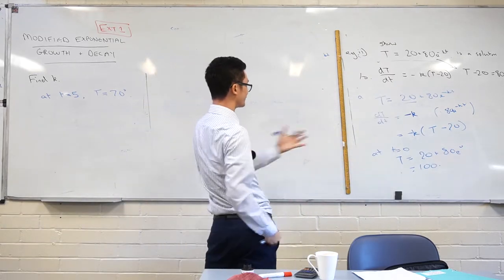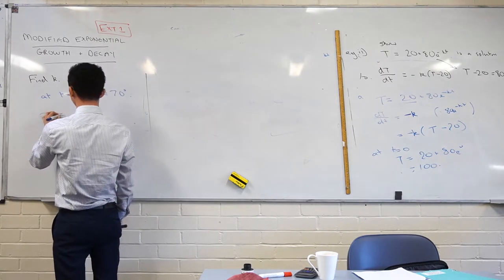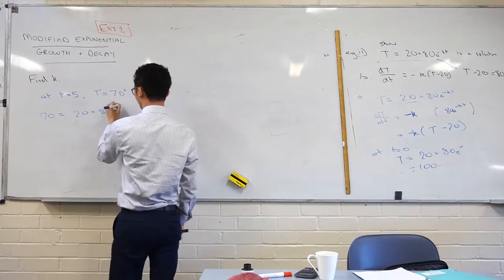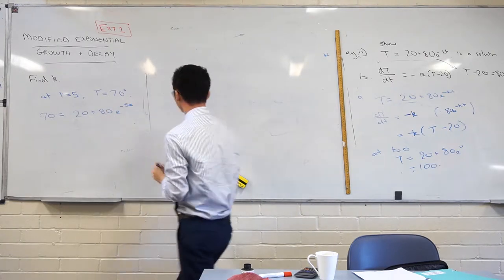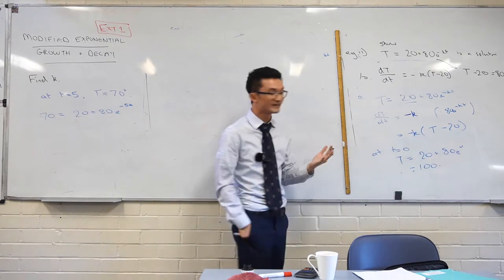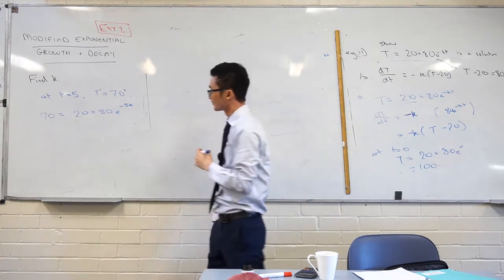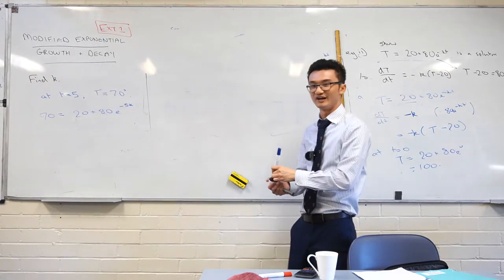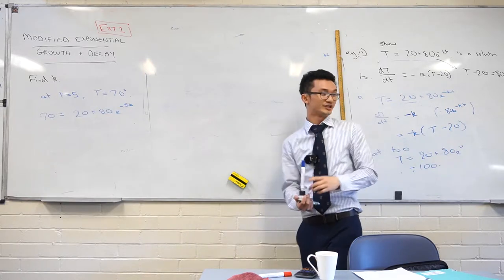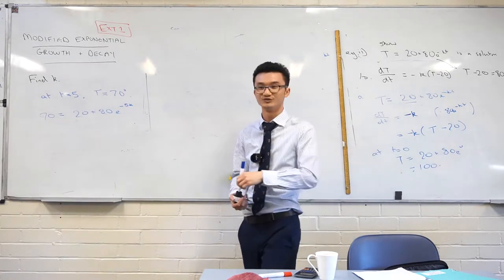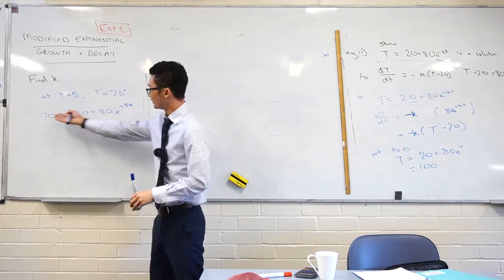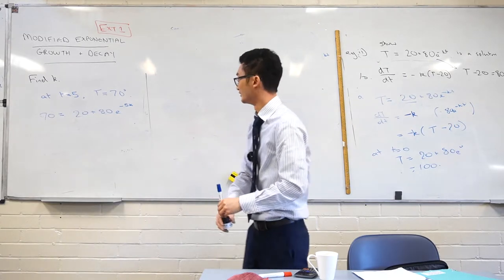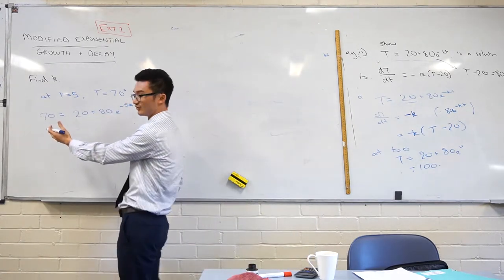They're not going to explicitly tell you, you know, t equals five, capital T equals 70. But you know, five minutes later, 70 degrees, we need to be able to interpret that information here. But once you've done that, we can substitute it into our expression, right? So 70 is equal to 20 plus 80e to the negative 5k. Don't forget that negative because we're dealing with exponential decay now, right?